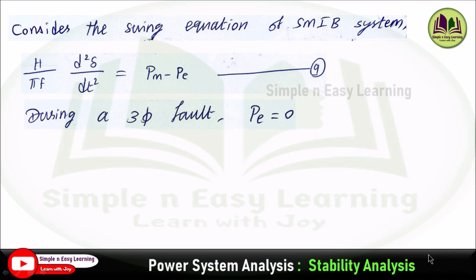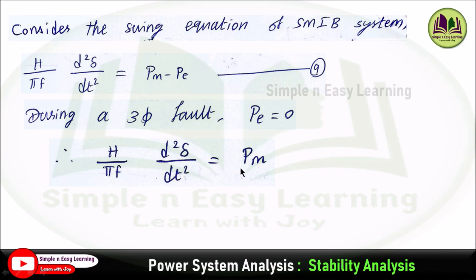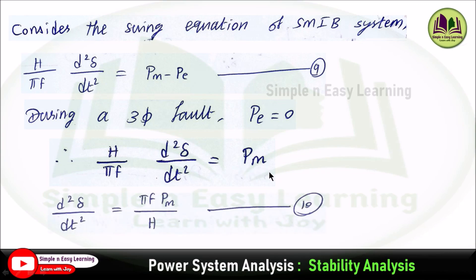During a three-phase fault, the electrical power will be equal to zero, so the equation becomes h by pi f into d squared delta divided by dt squared equal to the mechanical power P_m. From that we can calculate d squared delta divided by dt squared equal to P_m divided by h, and pi f goes to the numerator, giving pi f P_m divided by h. This is the tenth equation.